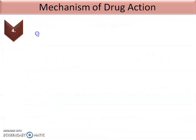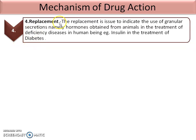The fourth drug action is replacement. Replacement is used to indicate the use of glandular secretions — namely hormones obtained from animals — in the treatment of deficiency diseases in human beings. Whenever our body cannot secrete certain hormones, they can be obtained through animal sources. Example: insulin in the treatment of diabetes.